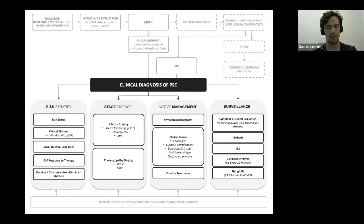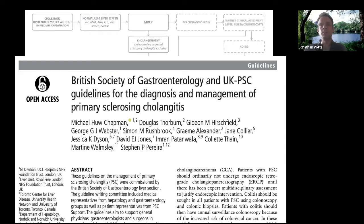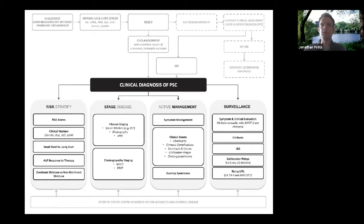We've got a schematic here - can you tell us what this reference is from? This is from the recent BSG guidelines published just a couple of years ago. It takes you through how to make the diagnosis: cholestatic biochemistry, negative liver screen, MRCP as the pathway, exclusion of other causes, and then breaking things down into risk stratification, disease staging, management of the symptomatic component, and ongoing disease surveillance.